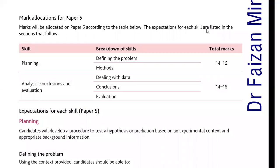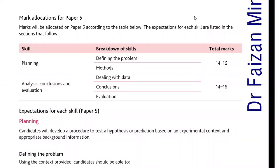The marks are allocated in Paper 5 for skills as follows. The basic skills being tested are planning, and the skills of analysis, conclusion and evaluation together. For planning, they will ask you to define the problem and assess methods — this accounts for 14 to 16 marks. For analysis, conclusion and evaluation, you will deal with data, draw conclusions, and evaluate from given evidence — again, about 14 to 16 marks are allocated for that.